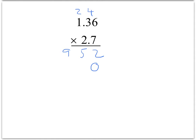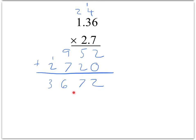Now we add a 0, then multiply 2 times 6, which is 12 — write down the 2, carry the 1. Then 2 times 3 is 6, add 1 is 7. And 2 times 1 is 2. Now we add: we get 2, 7, 16 — carry the 1 — and we get 3. So that's step one. Now step two: we move the decimal point left by the total number of digits to the right of the decimal point in both factors — that's 2 plus 1, which is 3. So we move three places to get 3.672.